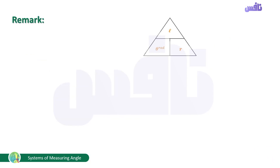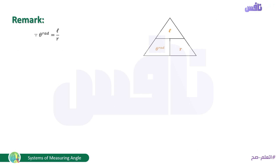Remark: we can form a magic triangle from the formula θ = L/r to derive related rules. From this triangle: L = θ rad × r, and r = L / θ rad. So we have three rules to find θ rad, L, or r.